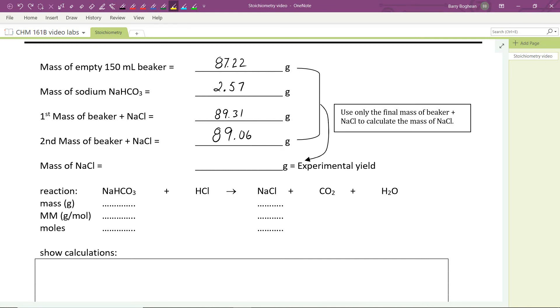Please present your calculations in exactly the same sequence as I'm showing them here and follow the same format as given in the previous example. For ease, I wrote the numbers in to start you off. 87.22 grams was the mass of the empty beaker. 2.57 grams was the mass of sodium bicarbonate added.